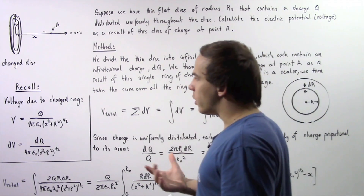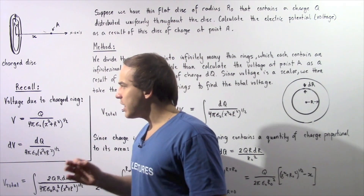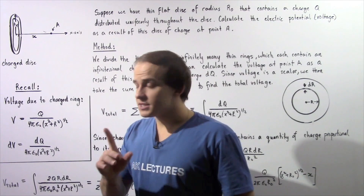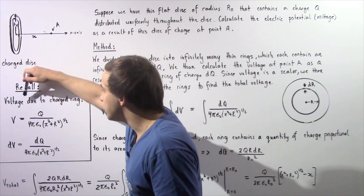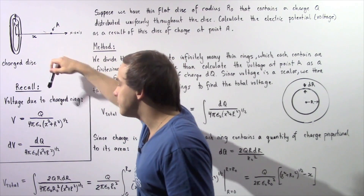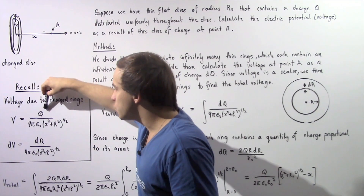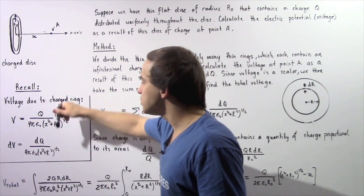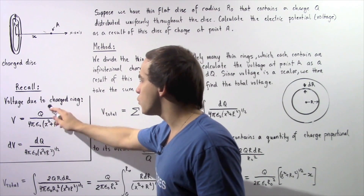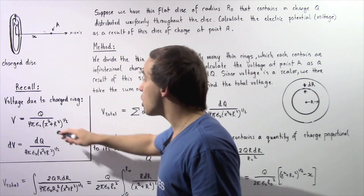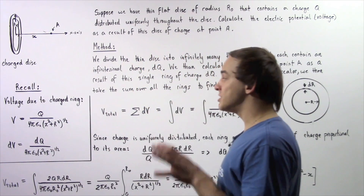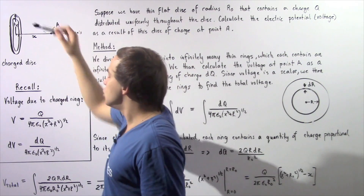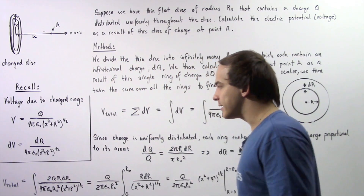We essentially want to recall the equation that we were able to show in the previous lecture. Previously we said the voltage as a result of a ring of charge is equal to Q divided by 4π epsilon-naught multiplied by the square root of x squared plus R squared, where R is the radius of that particular ring and x is the distance from point A to the center of that ring.